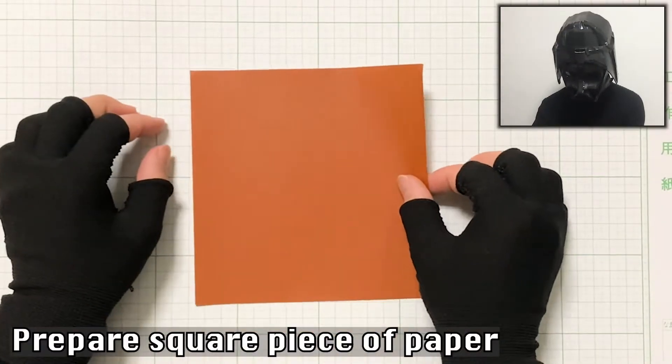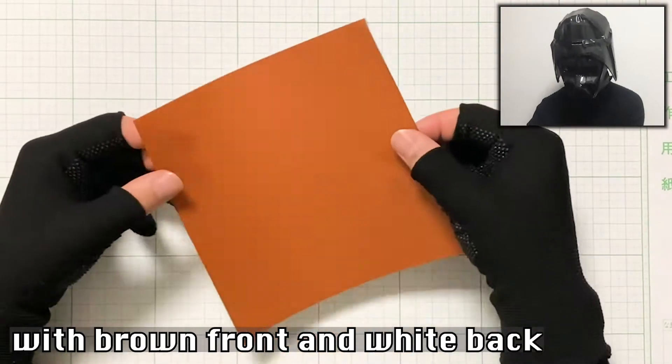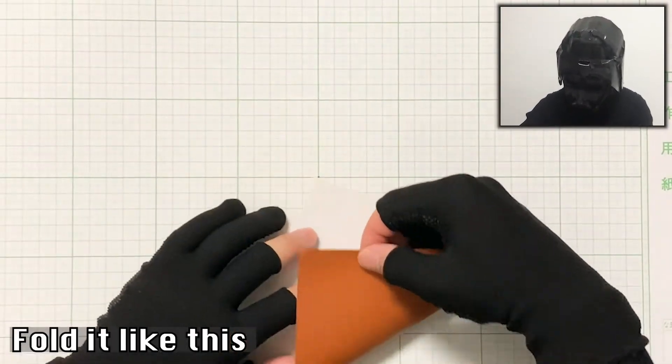First, prepare a square piece of paper with brown front and white back. Hold it like this.